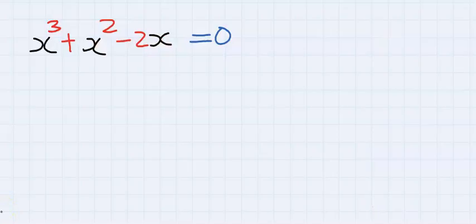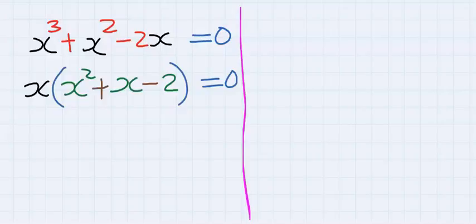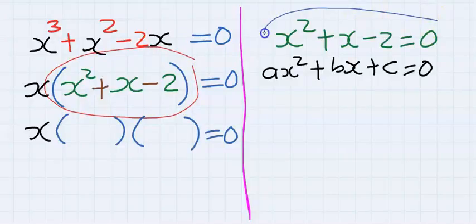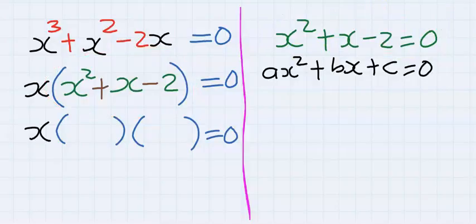Next, x is common in all of them. Next solve for this quadratic equation. To solve this you can use factorization method, completing the square method, or formula method. Let's consider factorization method. Here we are going to multiply the coefficient of a with the constant.